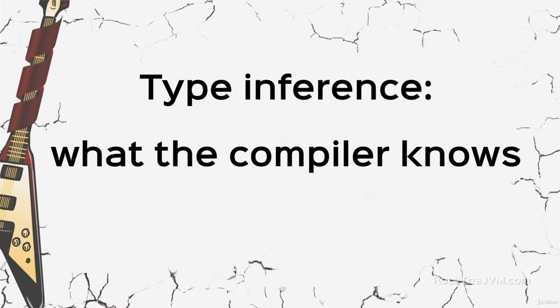Hey, welcome back! I'm Daniel and in this video, which is probably going to be a little shorter, we're going to talk about type inference, about what the compiler is able to figure out when we don't specify types explicitly.